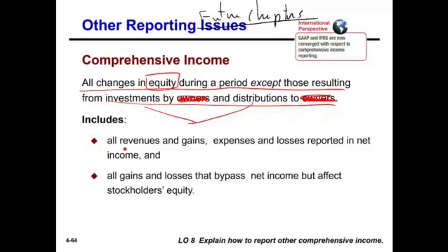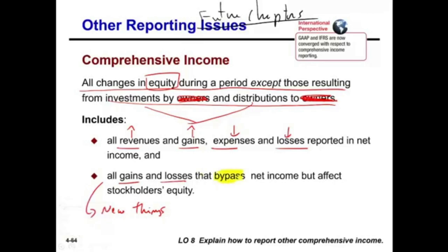What's included in equity? Revenues, gains, expenses, and losses. Revenues and gains increase equity; expenses and losses reduce equity. Also included in comprehensive income — and this is the new thing — are gains and losses that bypass net income but affect stockholders' equity.